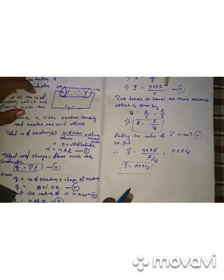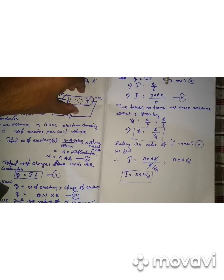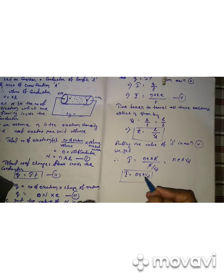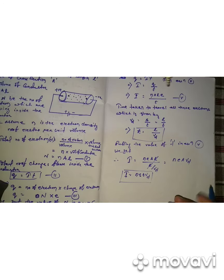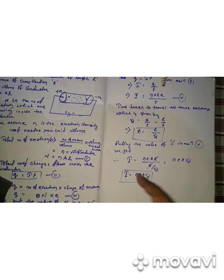If current I is constant and n and e are constant, we can examine the relation between area A and drift velocity Vd. If we increase the area of the conductor, the drift velocity decreases. Similarly, if we keep n, e, and A constant, then increasing the drift velocity increases the current at a particular given temperature. So the final relation is I equals nAeVd.